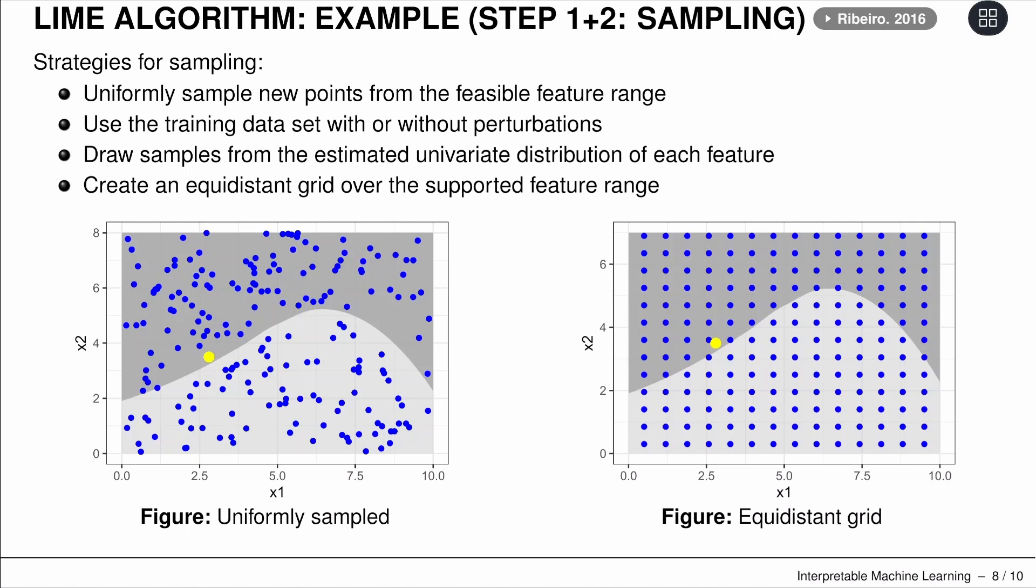The first part is sampling from our space to get possible points. This can be done in different ways—randomly sample like we see here, or use an equidistant grid. It depends on your data and model.